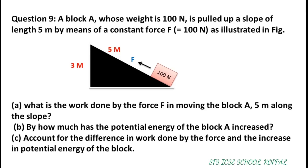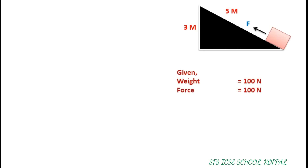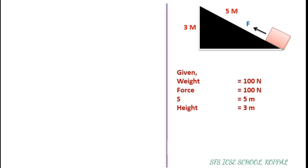This is an easy question, only looks like a tough one. First of all, let us write the values given in the question. Given that: weight W equals 100 N, force F equals 100 N, displacement equals 5 m, and height equals 3 m. Now let us do part A.